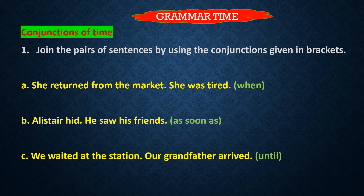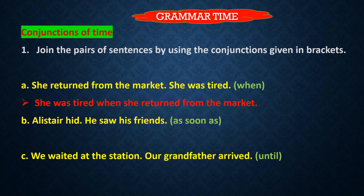See part A: 'She returned from the market. She was tired.' We have to join these two sentences using the conjunction 'when.' When is a conjunction of time. So the joined sentence is: 'She was tired when she returned from the market.' We have joined these two sentences — this is the work of the conjunction, to join sentences or words.